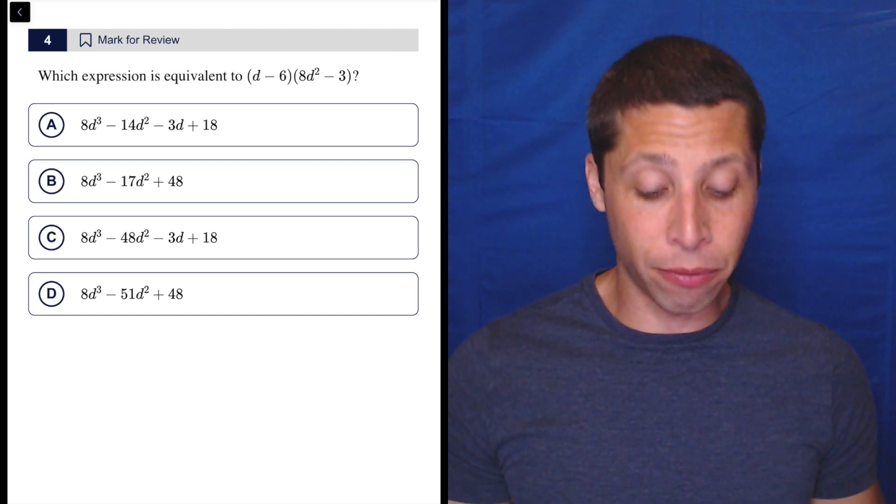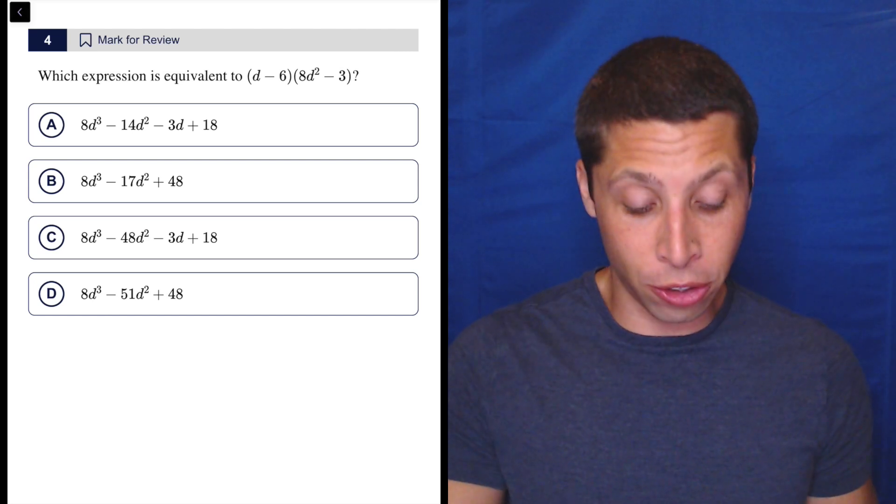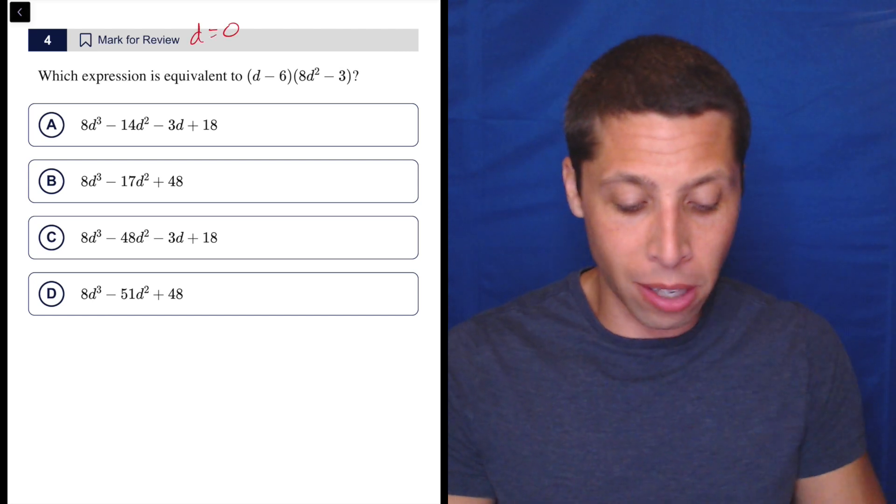The algebra here is not so bad. This is basic foiling, but it also doesn't take long to just try D equals zero and see what you get.